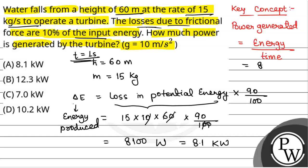So power generated will be equal to 8100 joules divided by 1 second, which is 8100 joules per second. This will be equal to 8.1 kilowatts. So the power generated will be 8.1 kilowatts, which is option A.